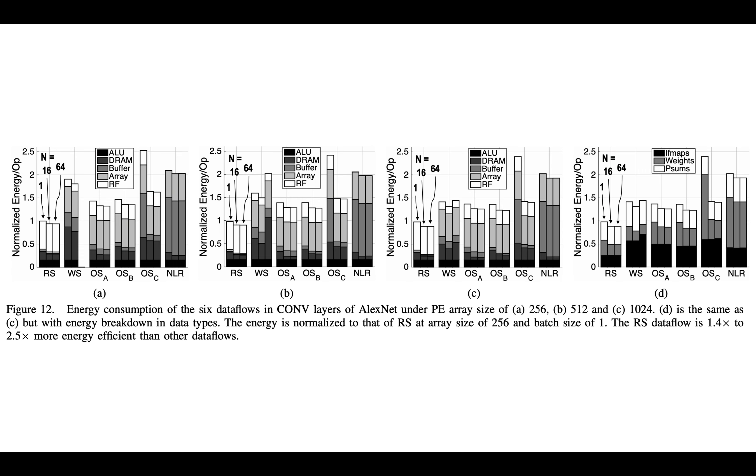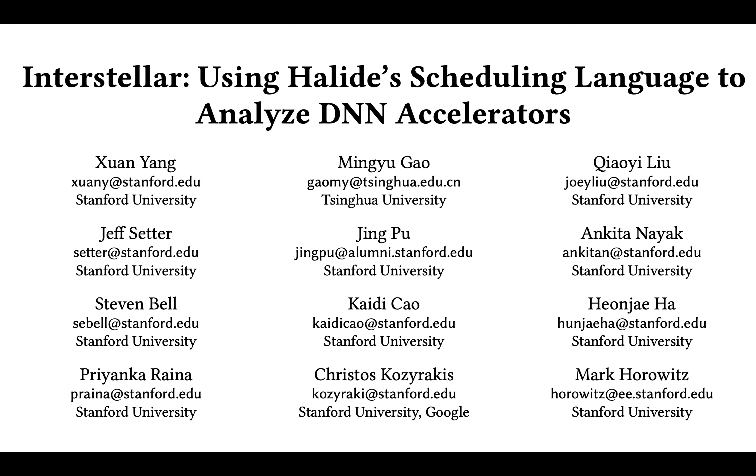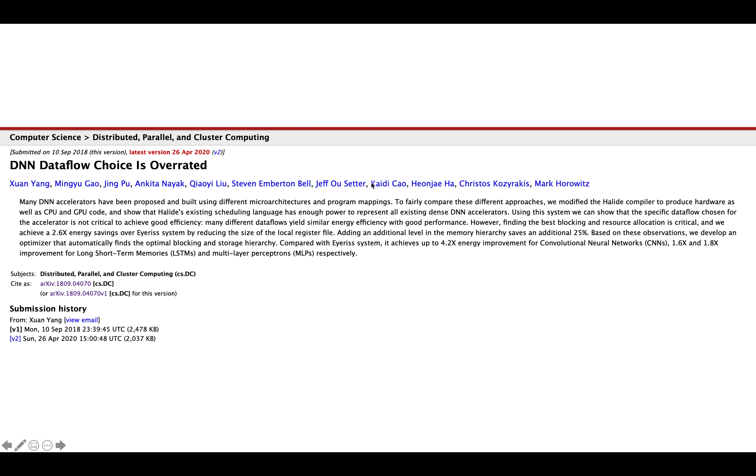So for a very different perspective on what matters in CNN accelerator design, you can check out this paper, Interstellar using Halide scheduling language to analyze DNN accelerators. And this was published at ASPLOS in 2020. But if you go on arXiv, it was pre-published under a different and more aggressive title, DNN data flow choice is overrated.